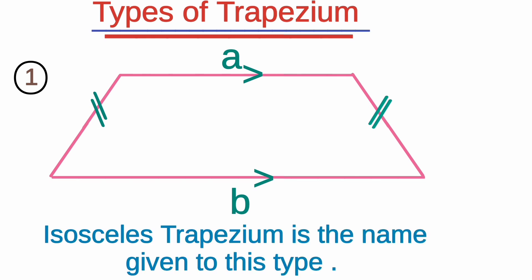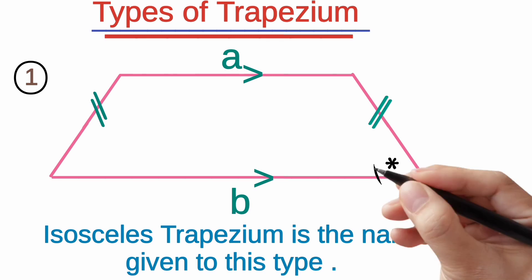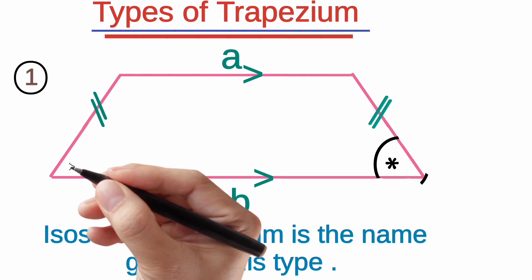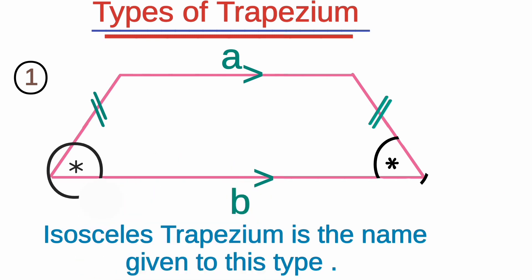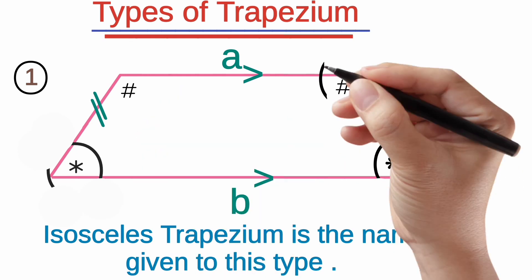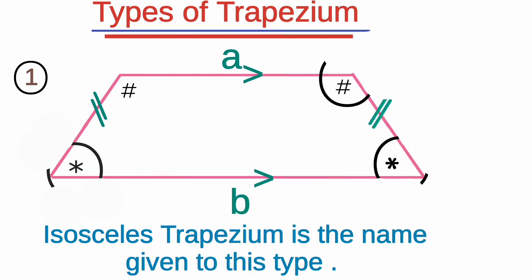This trapezium is known as an isosceles trapezium. It is made up of two right-angle triangles and a rectangle in the middle. You can witness that by looking carefully at the diagram. The angles at B are indicated with an asterisk sign, and the angles at A are indicated with an asterisk tag. The asterisk angles are equal to each other, and the asterisk sign angles are also equal.